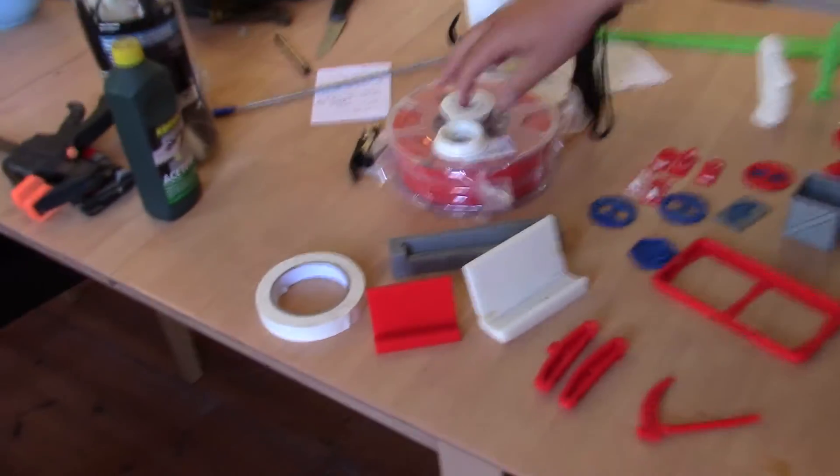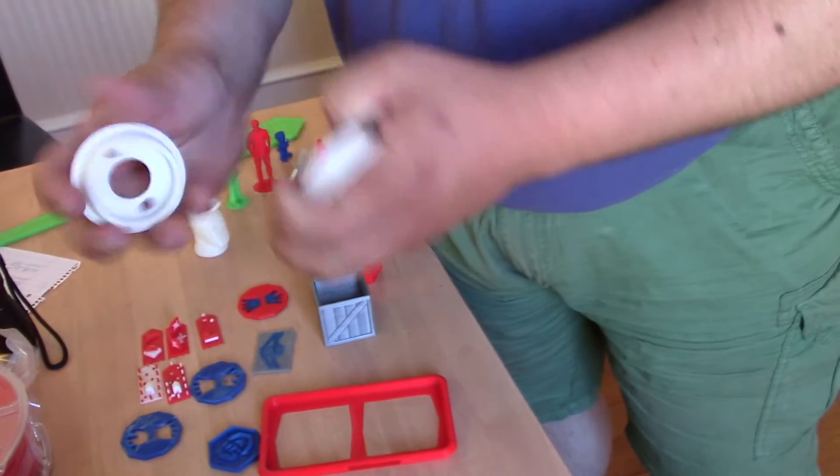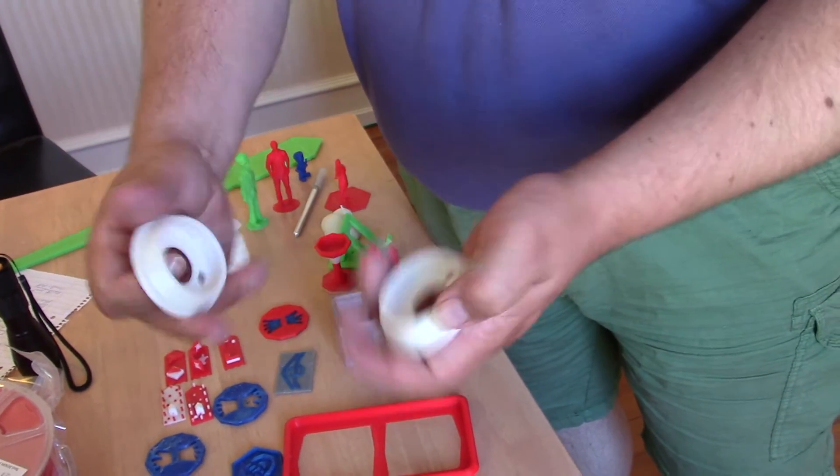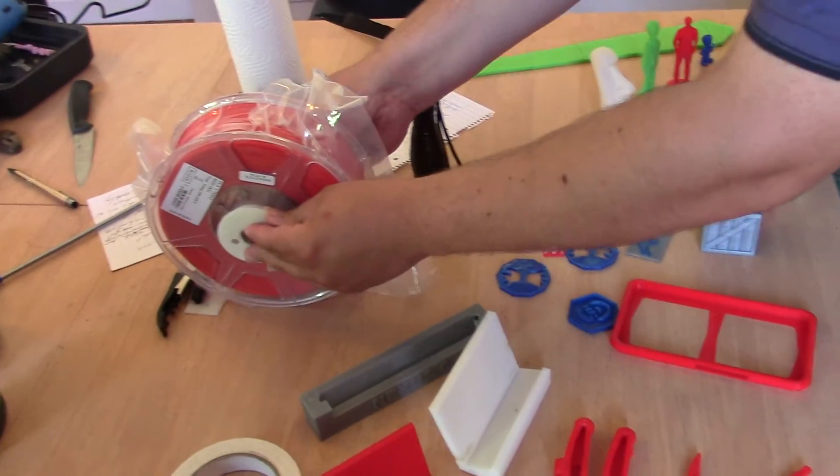Of a more practical nature, we print with these. These are just some conic shaped spacers and we use them to hang out our filament on the rack.